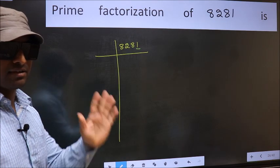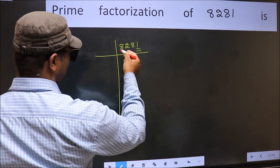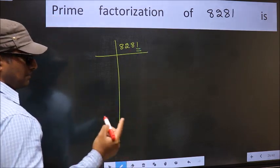Next prime number 5. Last digit is neither 0 nor 5, so this is not divisible by 5. Next prime number 7.